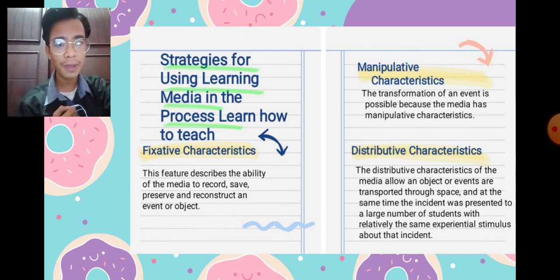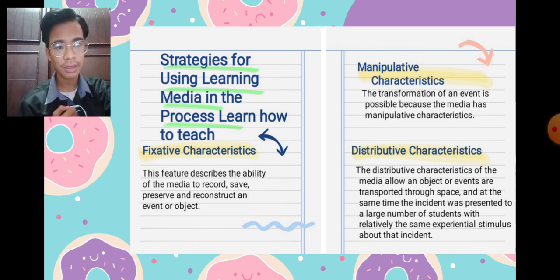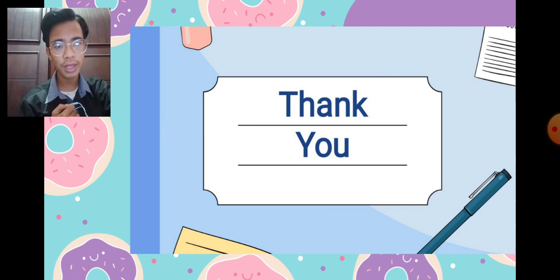Regarding the strategies for using learning media, there are three key characteristics. The first is fixative characteristics, which describes the ability of the media to record, save, preserve, and reconstruct an event or object. The second is manipulative characteristics, where transformation of an event is possible because the media has manipulative features. The third is distributive characteristics, which allow an object or event to be transferred through space, presenting the same experiential stimulus to a large number of students simultaneously.